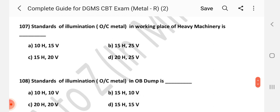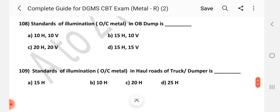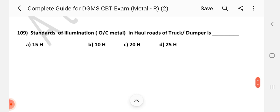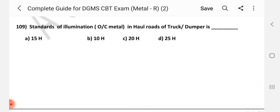Question number 107. Standards of illumination open cast metal mines in working place of heavy machinery is dash. Answer is C, 15 horizontal comma 20 vertical. Question number 108. Standard of illumination open cast metal in OB dump is dash. Answer is D, 15 horizontal comma 15 vertical.